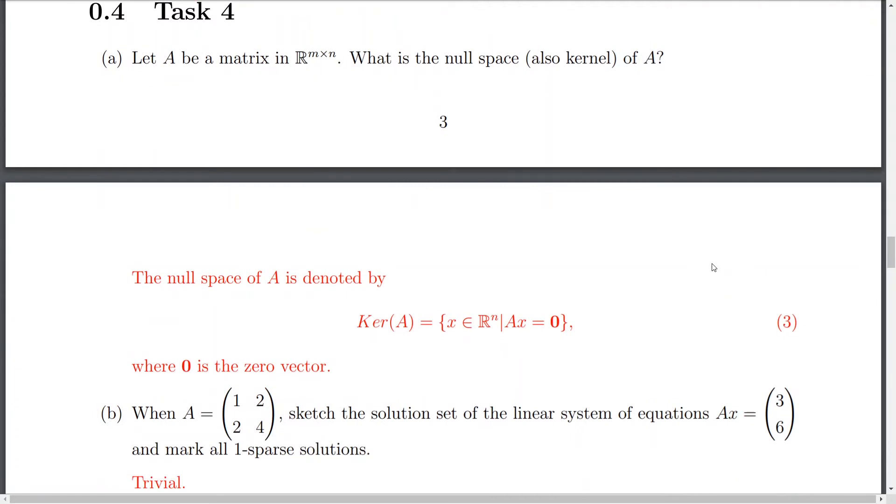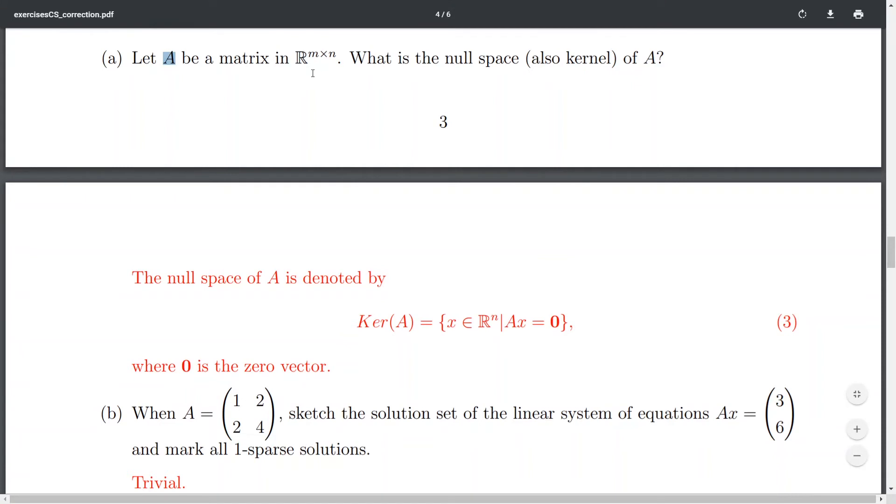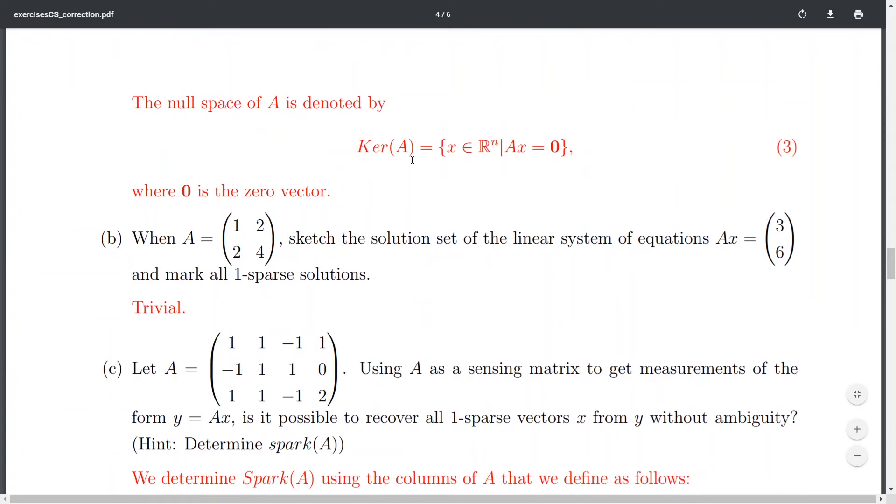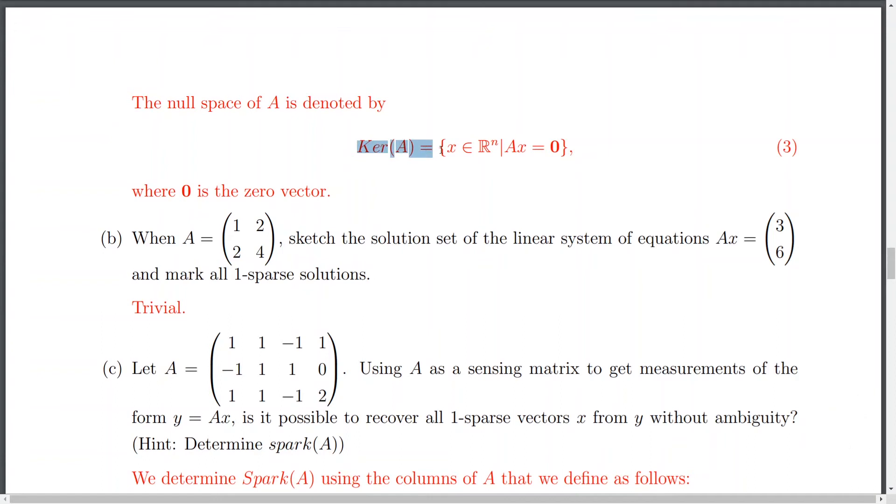Okay. So, now task 4. So, we have a matrix A in R, M by N. So, here we don't have, like our matrix cannot be non-singular, but its rank should be the minimum between, like maximum rank could be the minimum between M and N. Okay. So, here we would like to know the null space or also called kernel of A. So, as simple as it is, the null space of matrix A is usually denoted by kernel or ker A equals, like the vectors x in Rn, such that if I multiply my matrix A by this vector x, we obtain a zero vector.